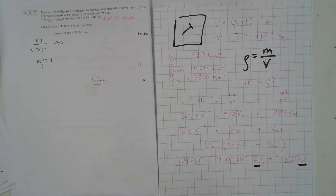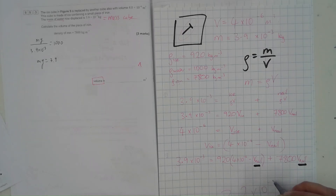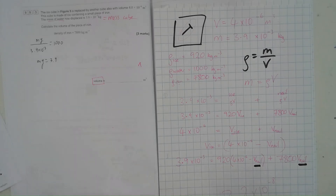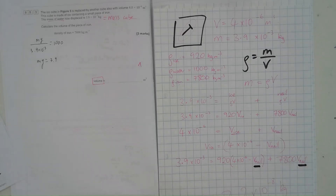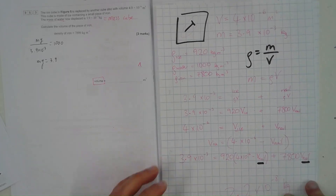I'll let you work that out yourselves. The answer I got is approximately 3.2×10⁻⁸ — and yes, 3.2×10⁻⁸ m³.